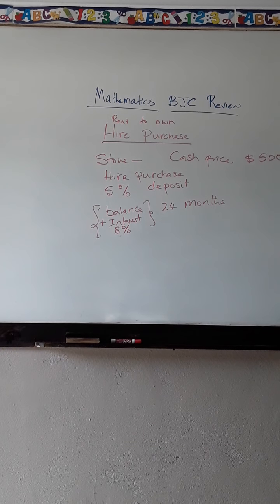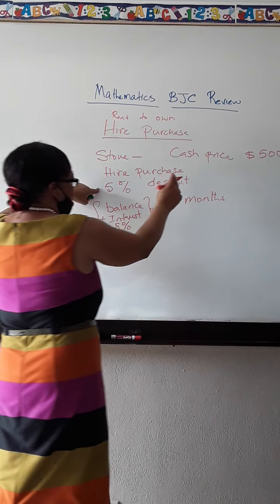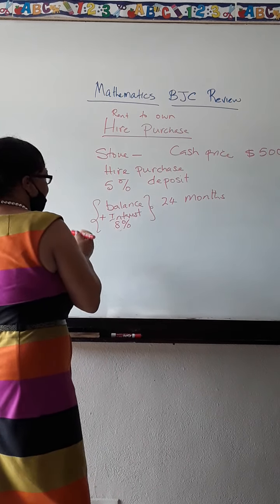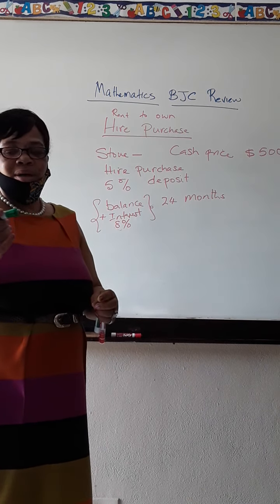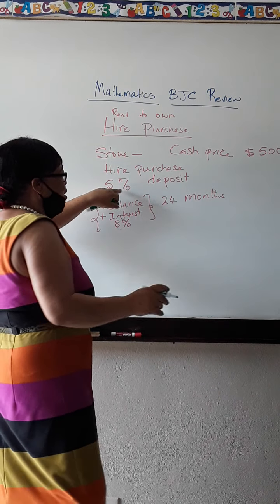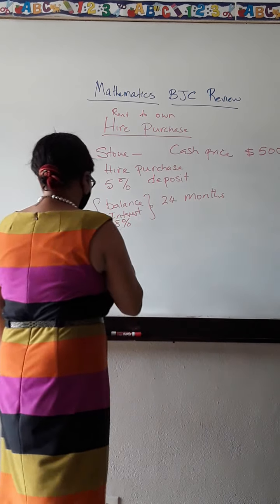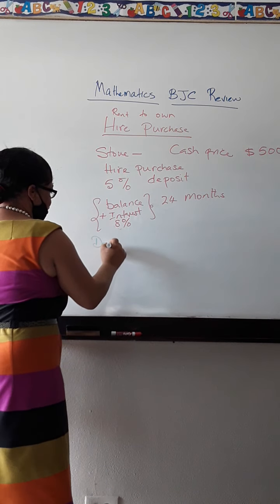So there are a few things that I have to do. I have to first of all find my deposit. So let's calculate the deposit here. The deposit is 5%. 5% of what? 5% of the cash price. Let's work out the deposit.